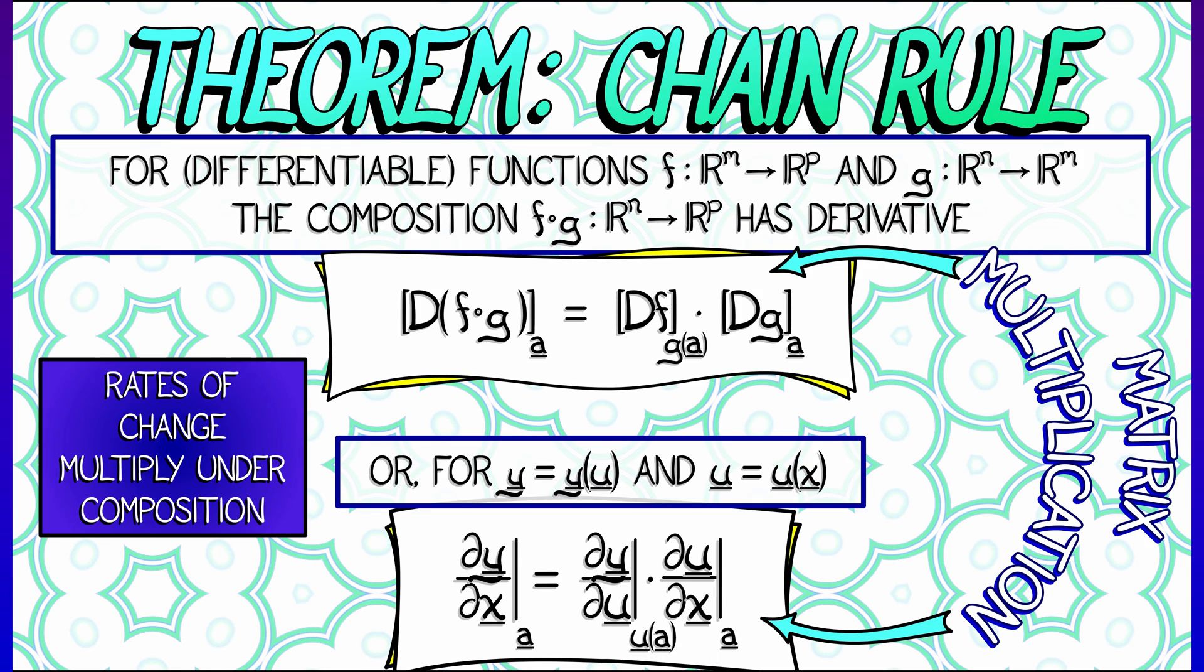Again, it's all matrix multiplication. That is really how the chain rule works.